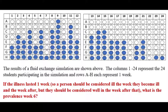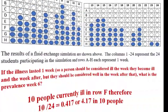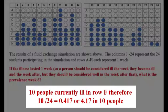How about person 3? Yes. Hit pause on the video and count the number of people you think are sick during week 6. Did you come up with 10? Then the calculation is 10 divided by 24, or 0.417, which we multiply by 10 and report as 4.17 in 10 people.